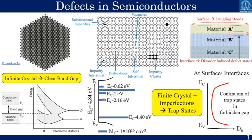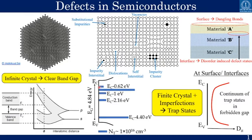In a typical semiconductor device we encounter stacks of materials. A heterostructure has material A deposited over material B over material C. Common sources of defects include surface states with dangling unsatisfied bonds, and interfaces between materials which cause disorder-induced defect states. At surfaces and interfaces, there is typically a continuum of states in the forbidden gap, while in the bulk of a crystal, defect states tend to appear at discrete energy levels.